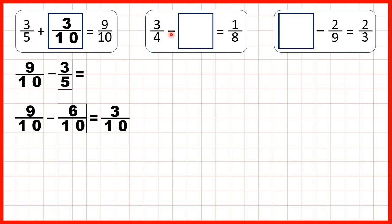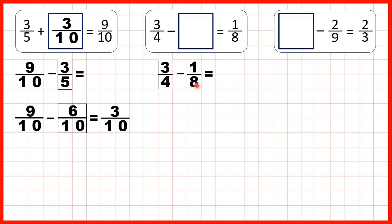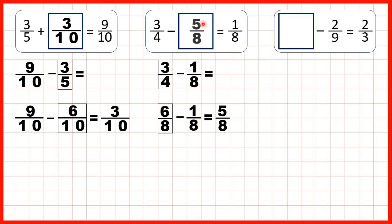Now, 3 quarters minus what equals 1 eighth. Here it's the second number of the subtraction — the subtrahend — that's missing. When we have a missing subtrahend we still use subtraction to find our missing number. So we need to work out 3 quarters minus 1 eighth. Again, to subtract fractions we need the denominators to be the same. 8 is in the 4 times table, so we can find an equivalent fraction to 3 quarters with a denominator of 8. That's 6 eighths, because 4 times 2 is 8 and 3 times 2 is 6. So when we subtract 1 eighth, the denominator stays the same and 6 minus 1 is 5. Our missing fraction is 5 eighths.